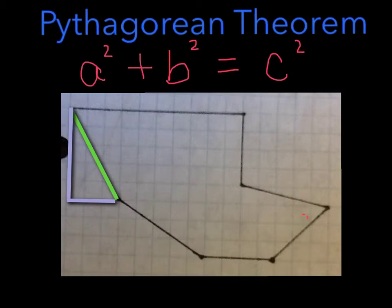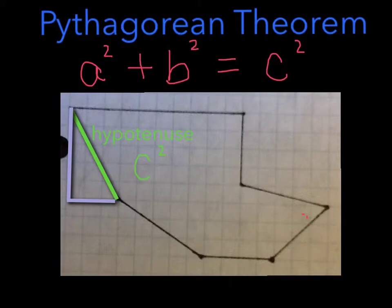Now we are going to find the slanted sides. The first slanted side is the green line, and we are going to find it by using the Pythagorean theorem, which is a squared plus b squared equals c squared. In this case, the green line is the hypotenuse, which is c, and that is what we are trying to find.